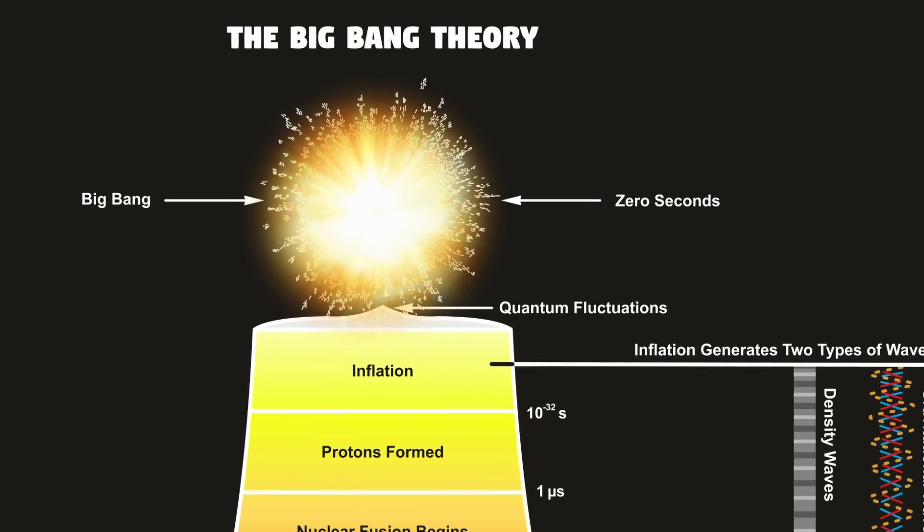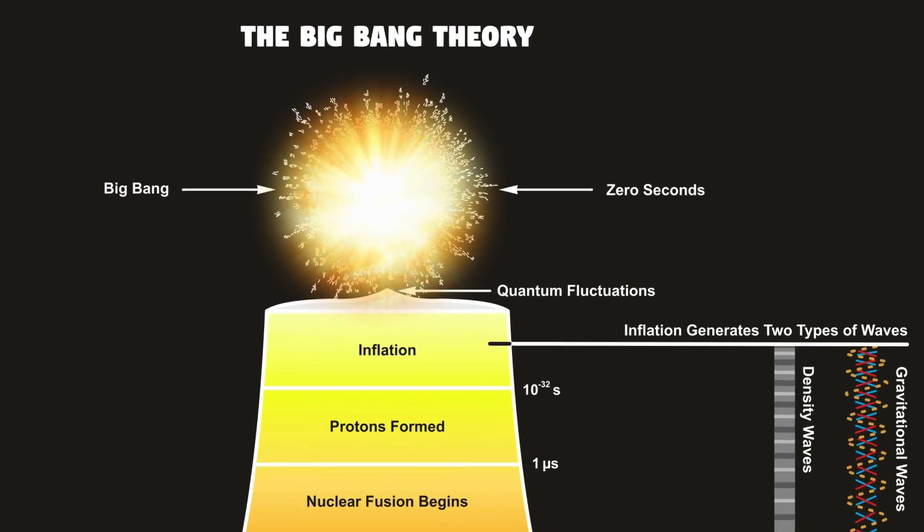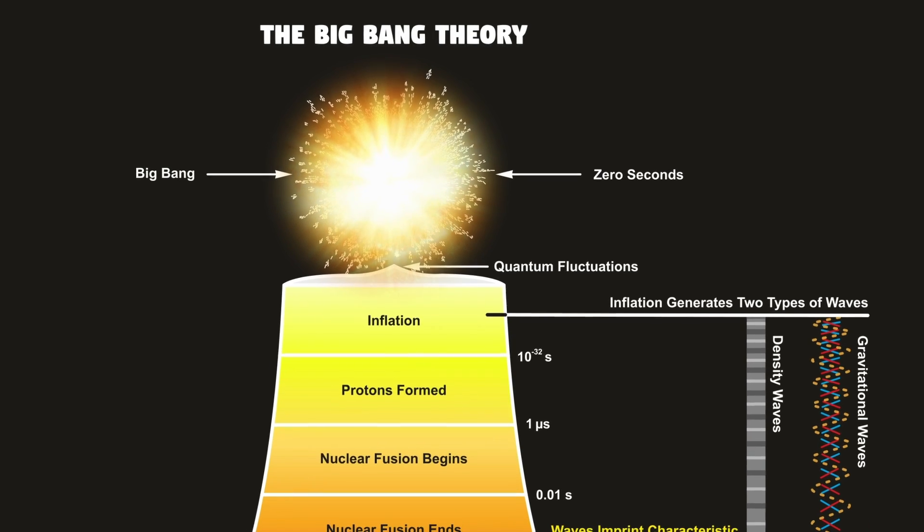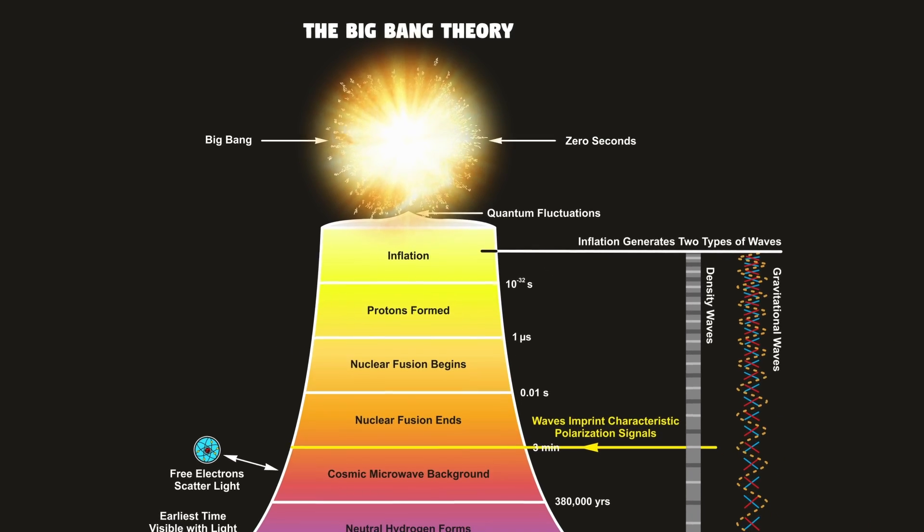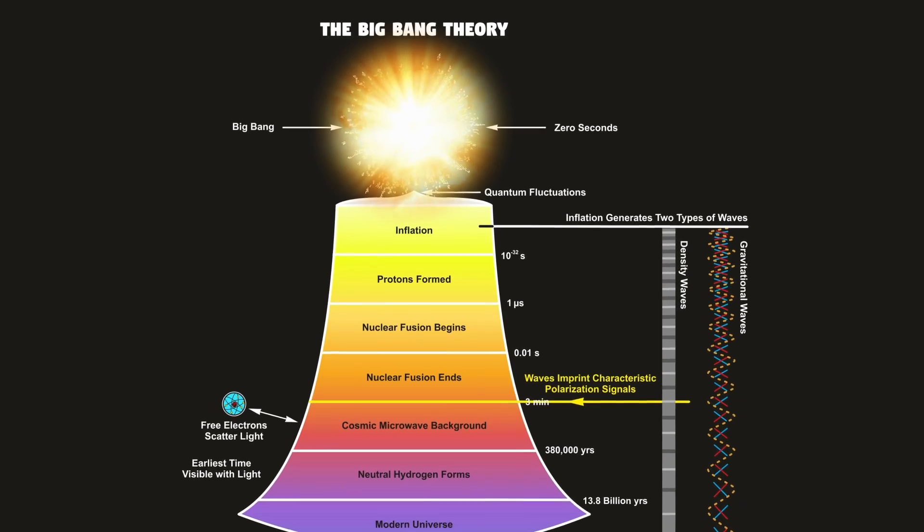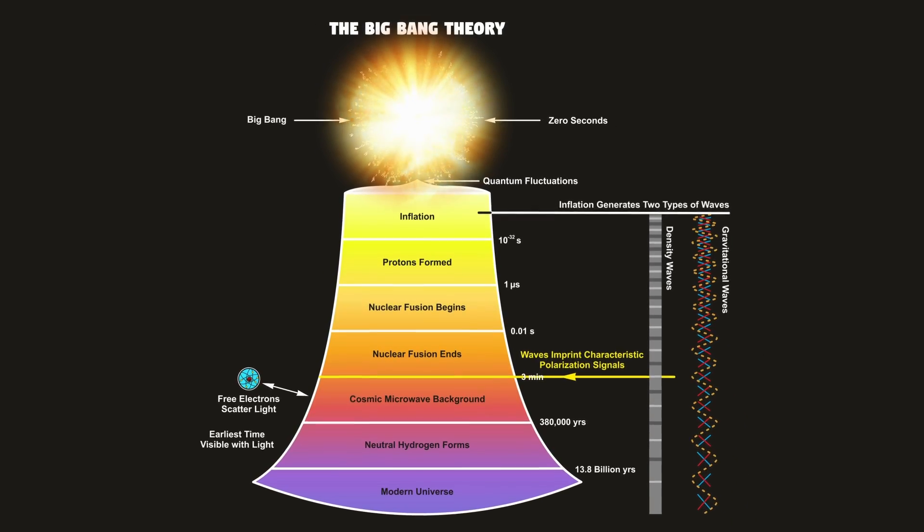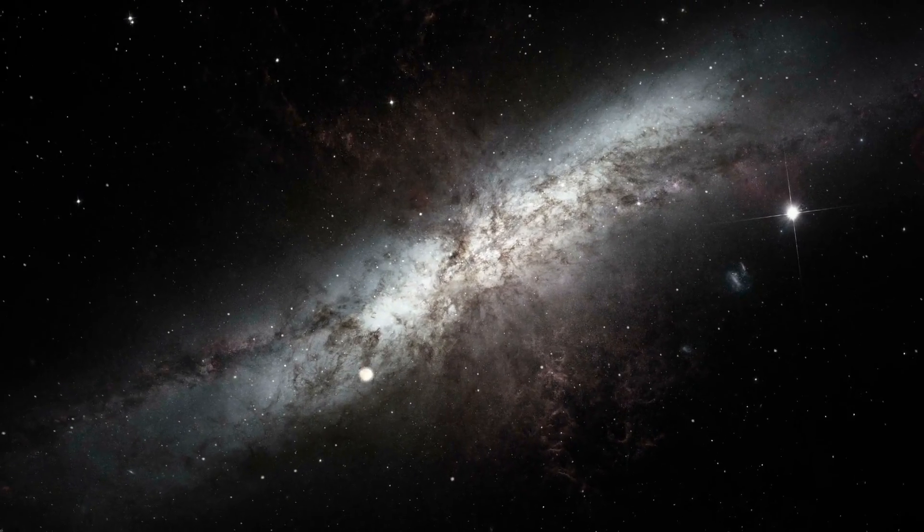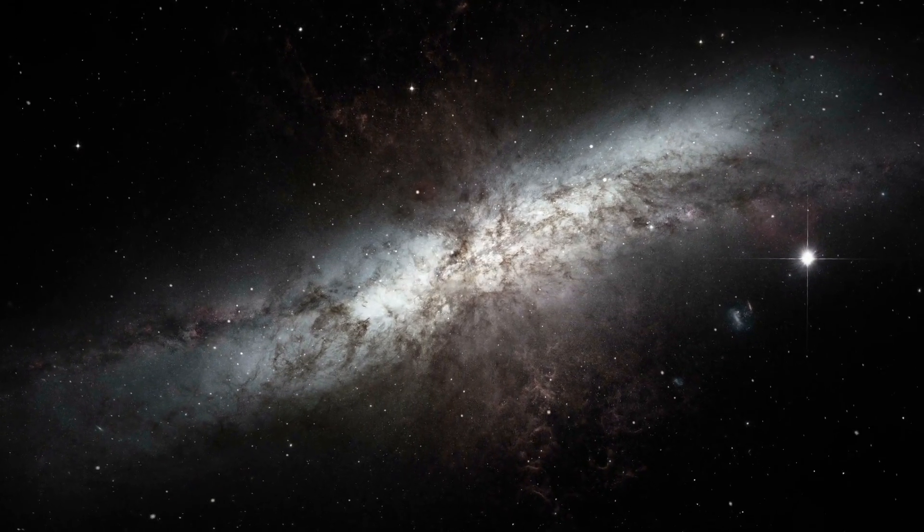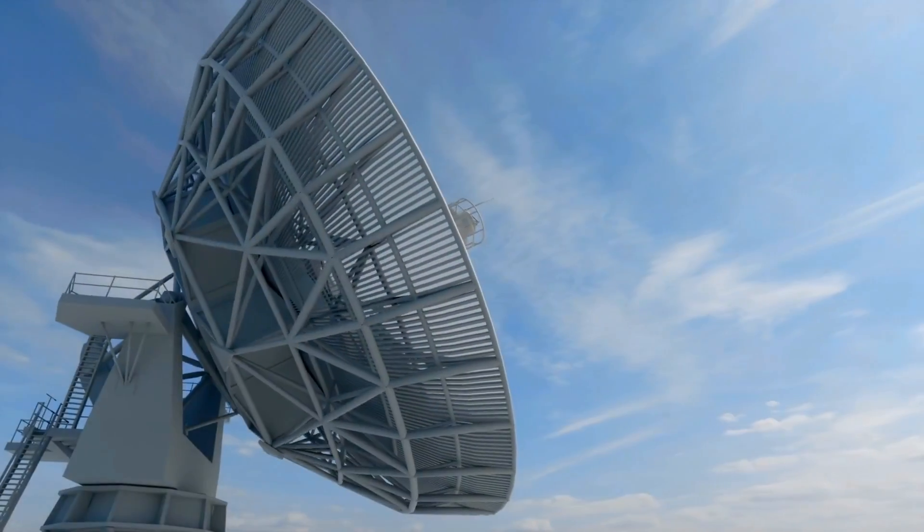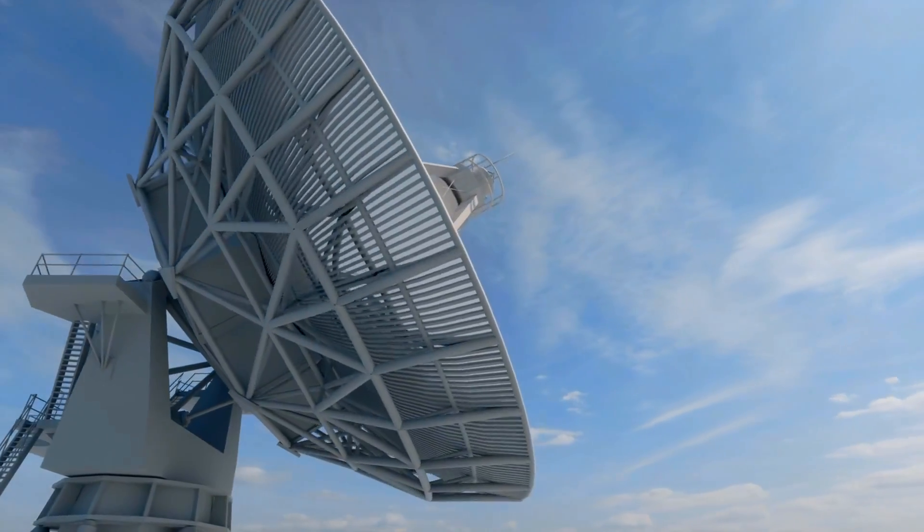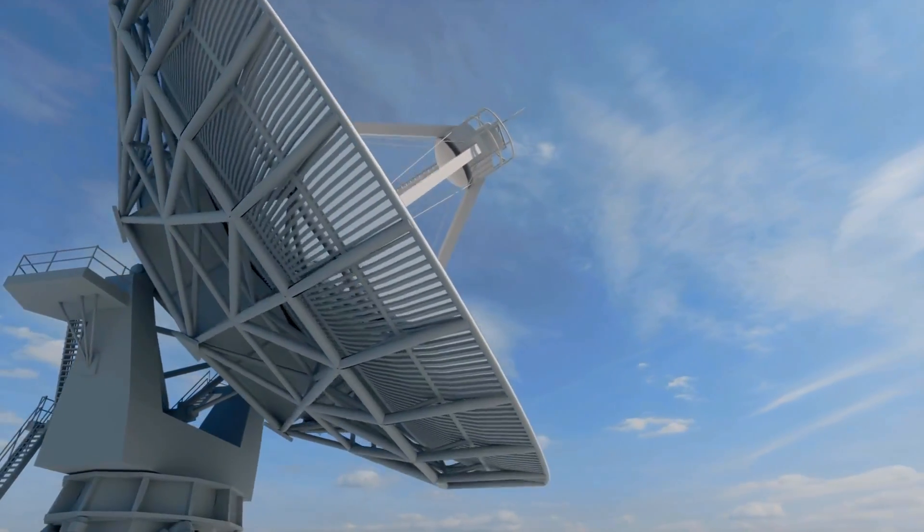For example, the horizon problem, the magnetic monopole problem, and the flatness problem are most commonly resolved with inflationary theory. But the details of the inflationary universe are still left unresolved, and many, including some founders of the theory, say it has been disproven. Judging inflation on how well it fits with anybody's speculative ideas about Planck-scale physics, physics that is well beyond what is observationally tested is inappropriate.